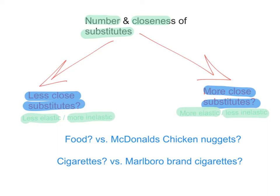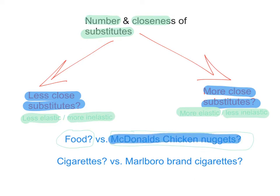For example, food as a commodity doesn't really have any substitutes, so the demand for food in general will be quite price inelastic. However, if you compare that to the demand for a very specific type of food — McDonald's chicken nuggets, for example — that's a very specific food item with lots of close substitutes. So the demand for McDonald's chicken nuggets is likely to be more elastic, or less inelastic.